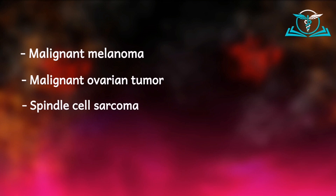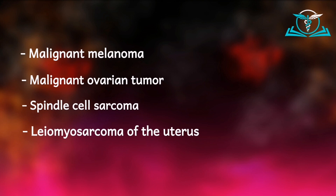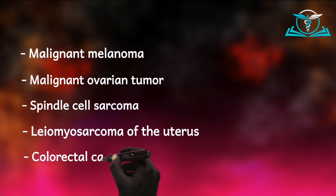We also have leiomyosarcoma of the uterus — smooth muscle of the uterus undergoing malignant change and spreading to the lungs — which can give that pattern. And then colorectal cancer as well. This video aimed to cover the common causes of cannonball appearance on chest X-ray.